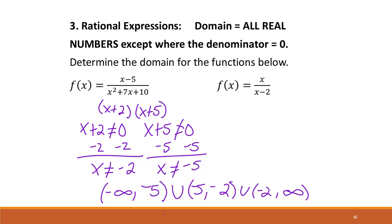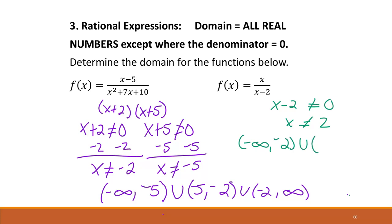For this last rational example, we have x minus 2 in the denominator. It cannot equal 0, so x cannot equal 2. That means the domain goes from negative infinity to 2, union 2 to positive infinity.